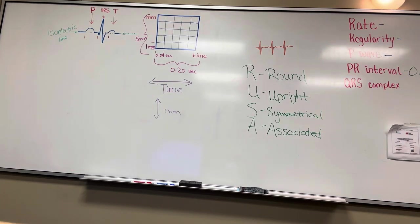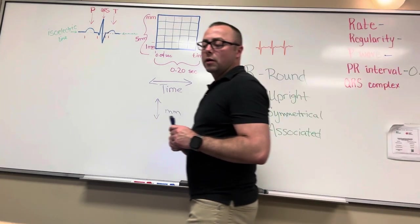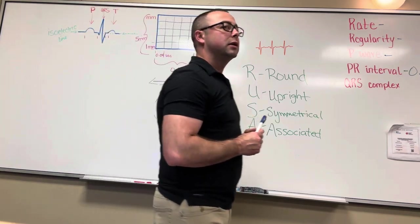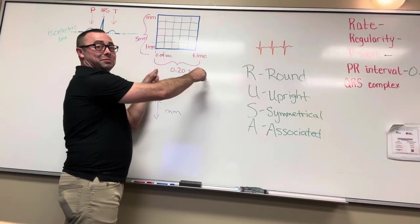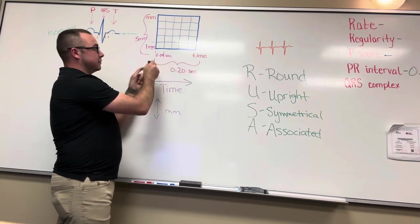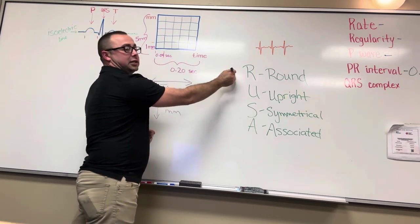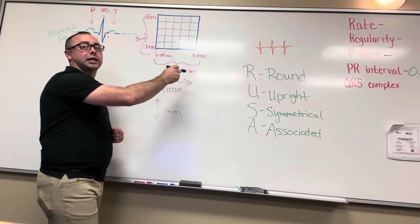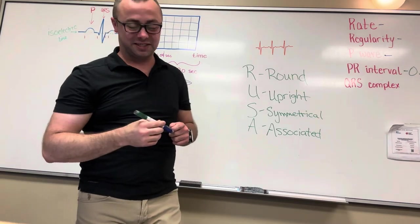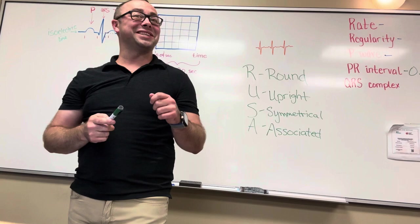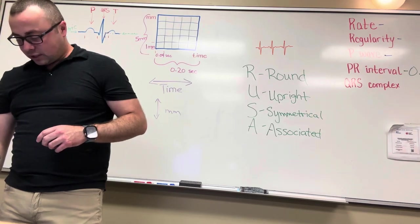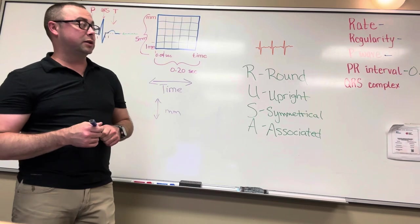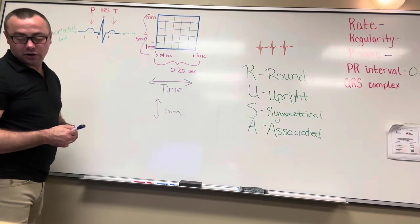So if something happens at the P wave and it doesn't get through until way over here, it's taking longer for the electricity to flow through — that's what the time is indicating. If the AV node is blocked, the electricity is not getting through fully. We'll focus on 0.12 to 0.20 seconds as the normal range for the PR interval — it needs to be right in between that time when we measure it.